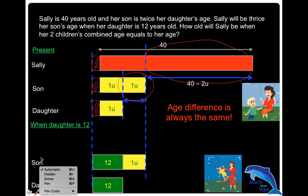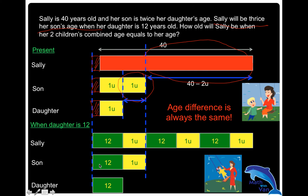At this point when the daughter is 12, Sally will be twice her son's age — so that means three times overall. We multiply by three throughout, so both the green block and the yellow block are multiplied by three throughout to get Sally's age. In expression form, we can call it two yellow blocks plus 24. Once you find the value of one yellow block, you'll know the present age of both the daughter and the son.